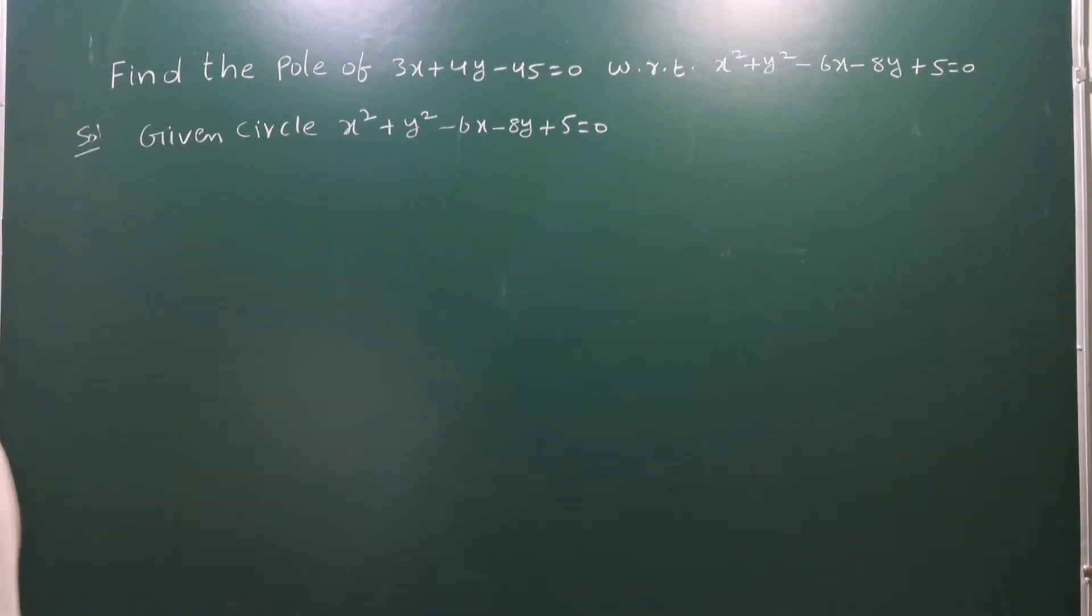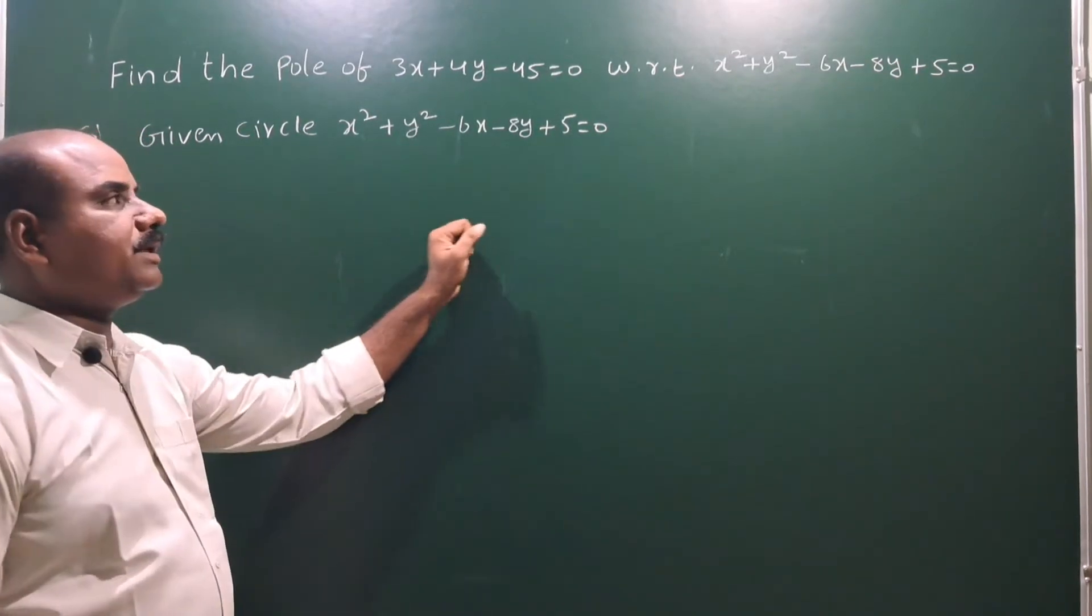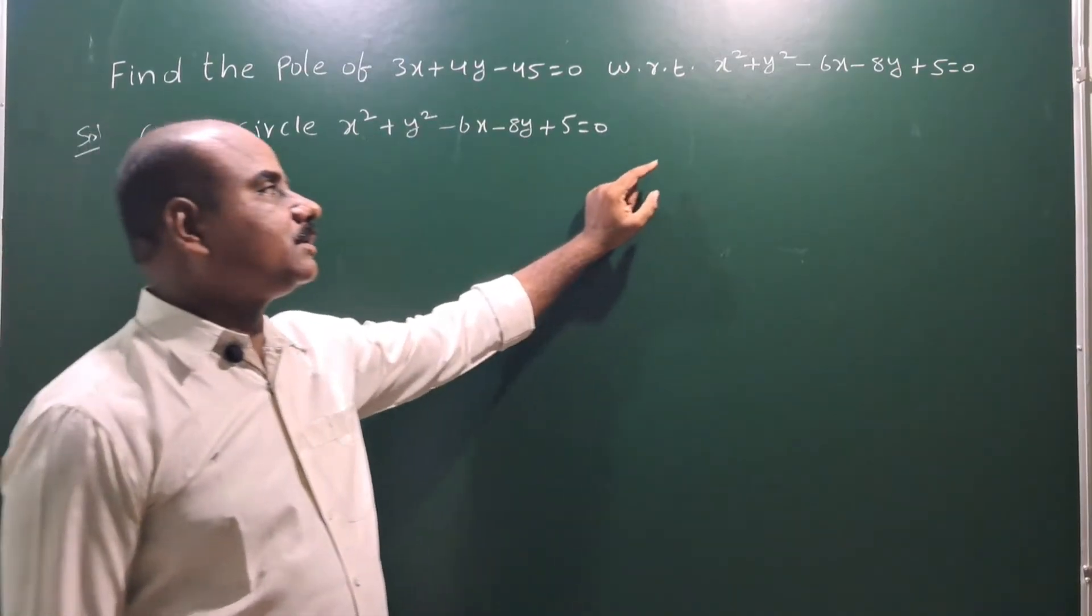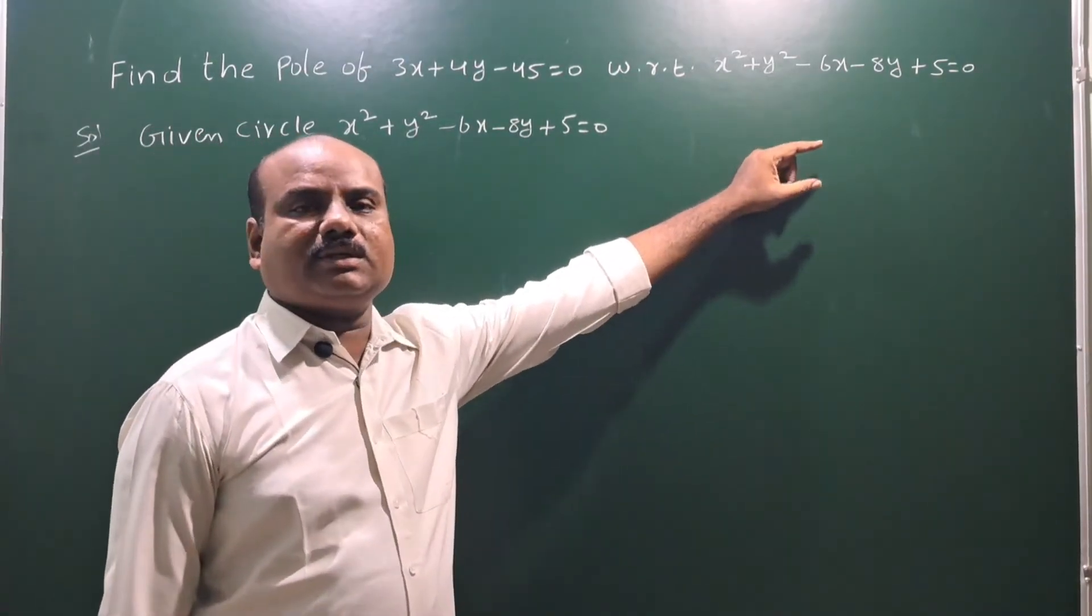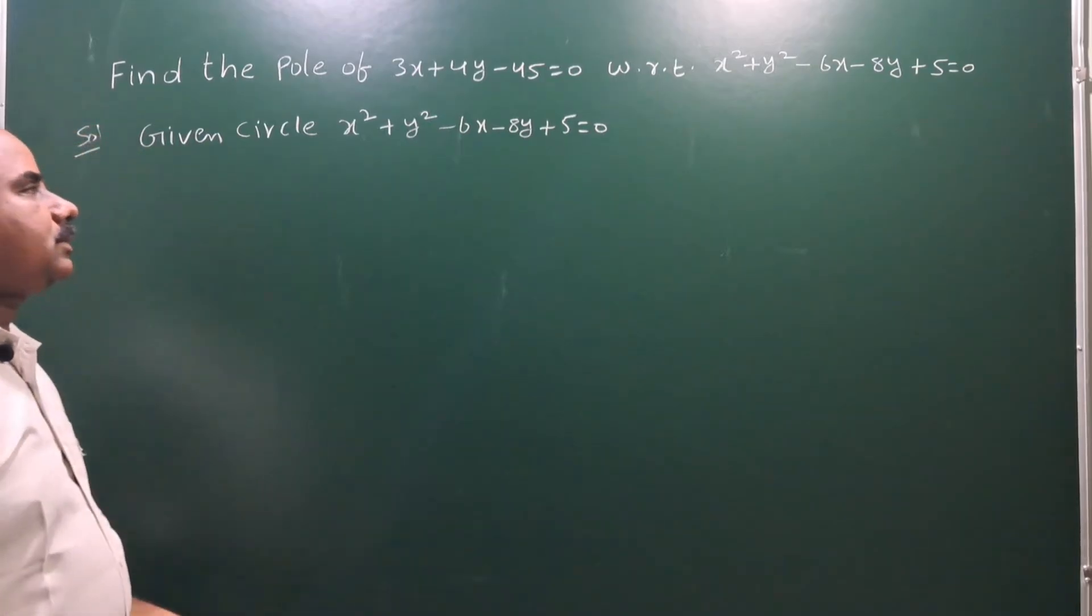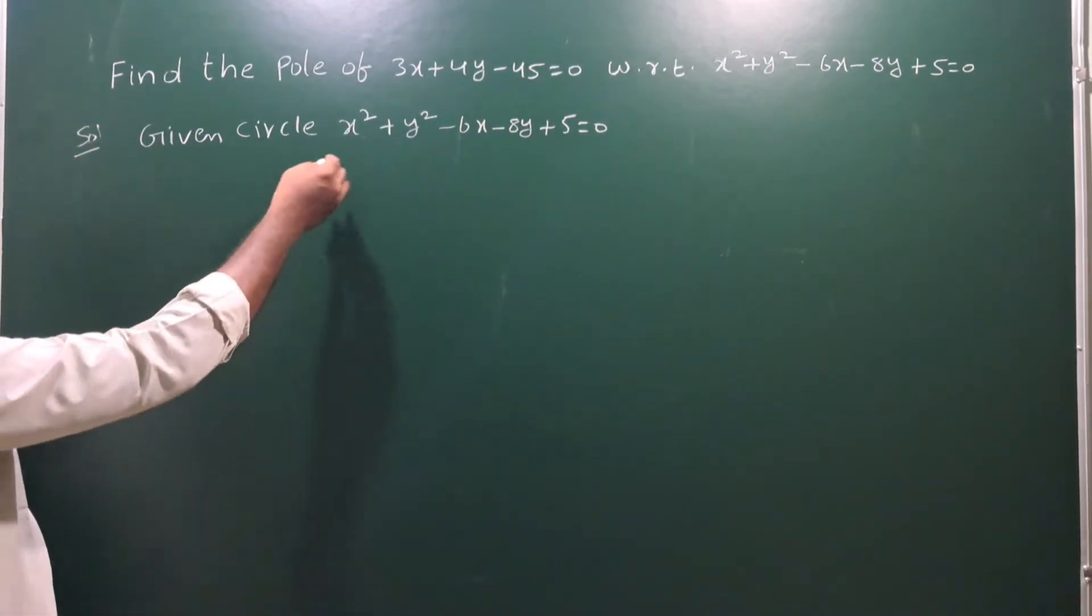Next problem, find the pole of 3x plus 4y minus 45 equals 0 with respect to the circle x squared plus y squared minus 6x minus 8y plus 5 equals 0. So given circle.